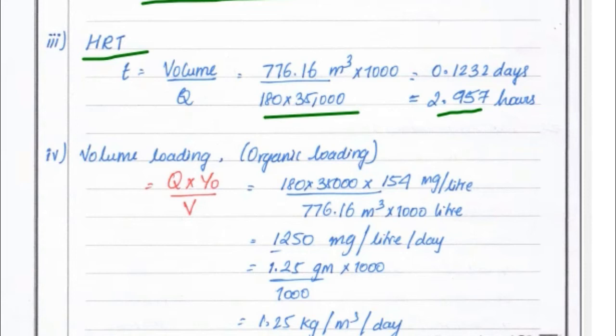Next, volume loading, that is organic loading. The formula is Q times Y0 divided by V. Q value is 180 times 35,000 times Y0 value 154, divided by the volume 776.16 meter cube times 1000 liters. We got the value of 1250 milligram per liter per day. We have to convert to kg per meter cube per day, so multiply 1000 divided by 1000. So 1.25 kg per meter cube per day is the volume loading.